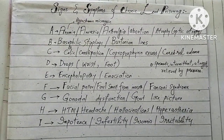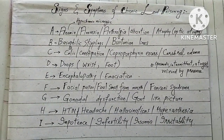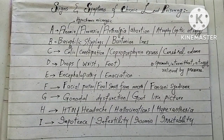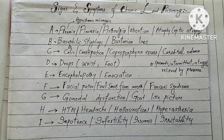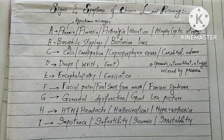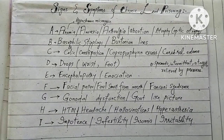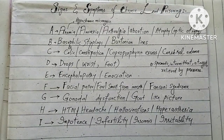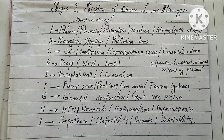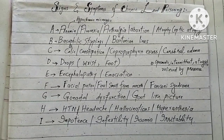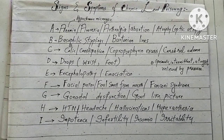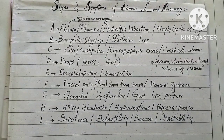Starting with A: chronic lead poisoning causes anemia, specifically hypochromic microcytic anemia. There is anorexia. There is also arthralgia, which means joint pain. There is abortion and atrophy, specifically optic atrophy.